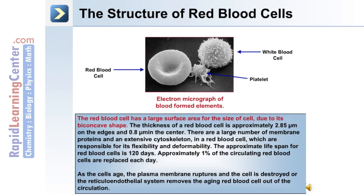A red blood cell can be seen in this electron micrograph, along with a platelet and a white blood cell. The red blood cell has a large surface area for its size because of its biconcave shape. The thickness of a red blood cell is approximately 2.85 micrometers on the edges and approximately 0.8 micrometers in the center. There are a large number of membrane proteins and an extensive cytoskeleton in a red blood cell, and these allow it to be flexible and deformable. The approximate lifespan for a red blood cell is 120 days, and approximately 1% of circulating red blood cells are replaced each day. As the cell ages, the plasma membrane ruptures and the cell is destroyed, or the reticuloendothelial system removes aging red blood cells out of the circulation.